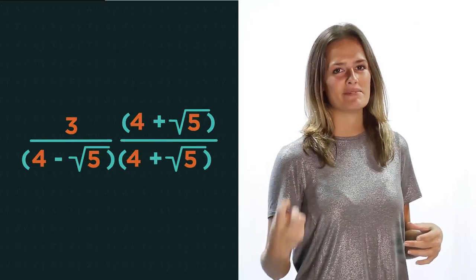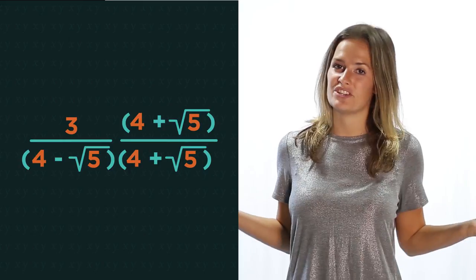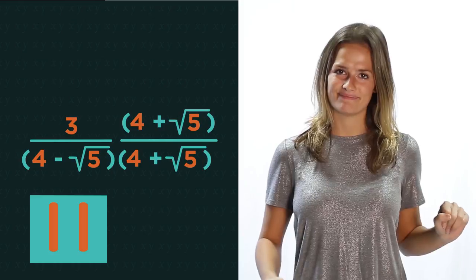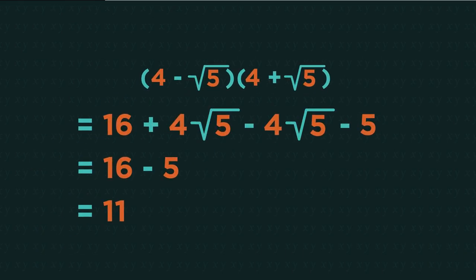This is exactly what we want to do here. We want to cancel out the surds. So expand the denominator brackets and watch what you get. Pause the video, work it out, and click play when you're ready. You should have got 11.